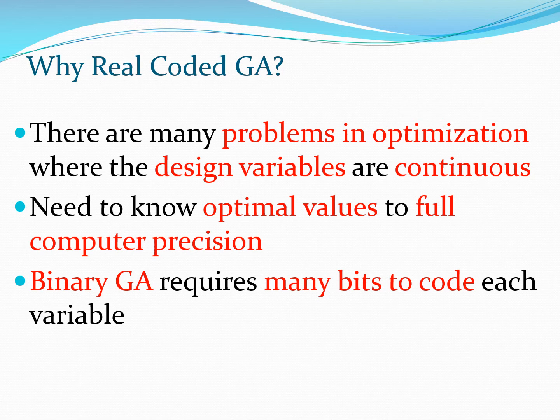So the question that comes to mind is: what is the need for real coded GA? Real coded GA is required because many optimization problems have design variables that are typically continuous, and you would like to know the optimal values to full computer precision — for example, 8 decimal places or 16 decimal places as the case may be.